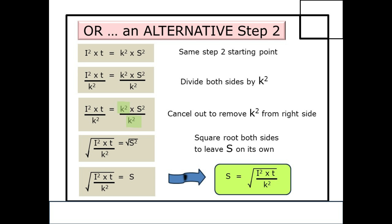There is an alternative solution for step 2, and the question is often asked: are they mathematically different or are they the same? We have the same starting point: I squared times T on the left equals K squared times S squared on the right. This time, divide both sides by K squared and cancel out on the right to remove K squared top and bottom. Now square root both sides — on the right the square root of S squared is just S on its own, since the square and square root cancel. Tidying up: S equals the square root of I squared times T divided by K squared.